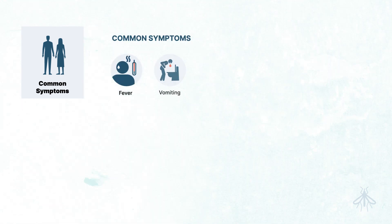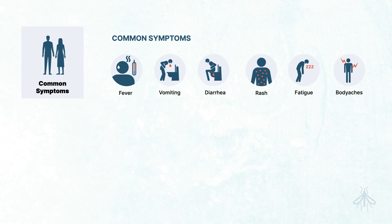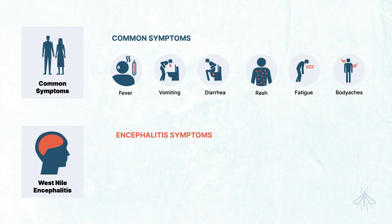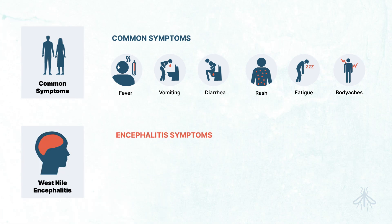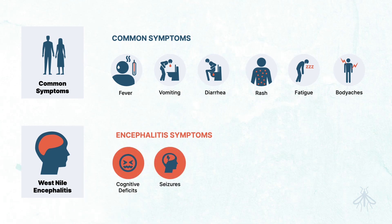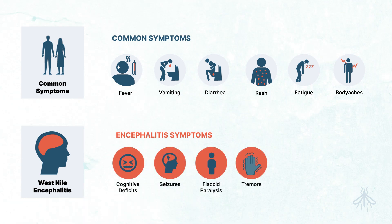Most people with West Nile encephalitis will remain asymptomatic or have signs and symptoms similar to those of a mild viral illness. Patients with encephalitis can present with various psychiatric and neurologic signs and symptoms, such as cognitive deficits, seizures, flaccid paralysis, and tremors.